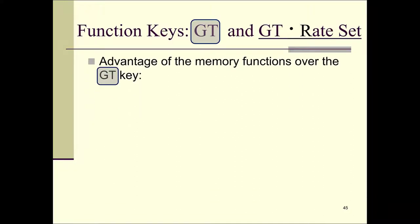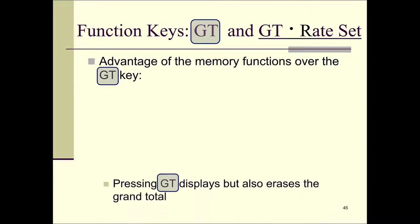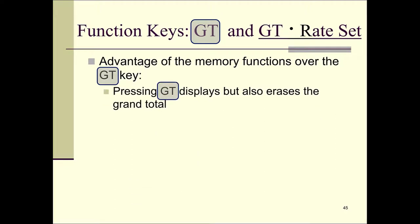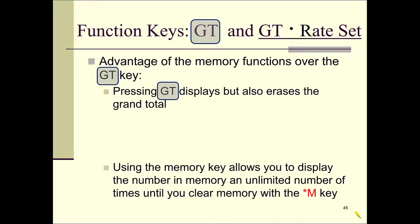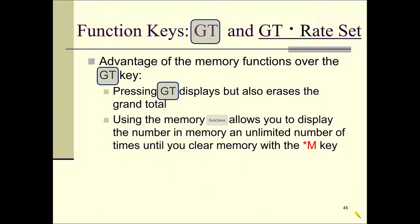Because the GT function gets erased, memory has a lot of advantages over the GT key. Pressing the GT key displays but also erases the grand total. Using the memory functions allows you to display the number in memory an unlimited number of times until you clear memory with the asterisk M. So you will probably be using the memory functions more often than the grand total function, but they both have their advantages.